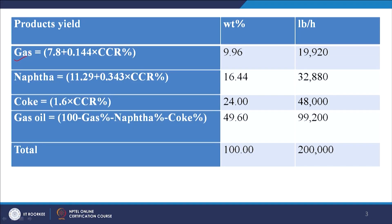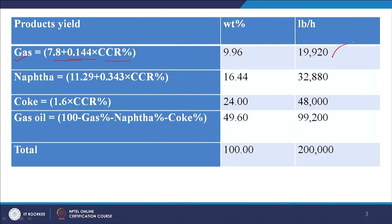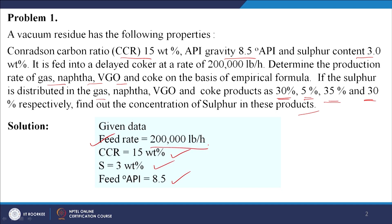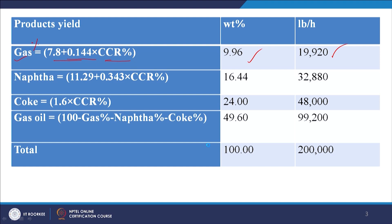The empirical expression for gas is: gas (weight percent) = 7.8 + 0.144 × CCR (weight percent). With CCR equal to 15%, we get 7.8 + 0.144 × 15 = 9.96 weight percent gas. Multiplying by the feed rate: 200,000 × 0.0996 = 19,920 pound per hour.